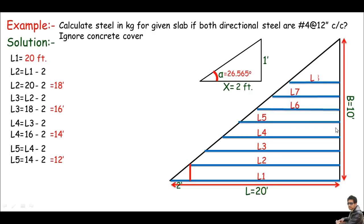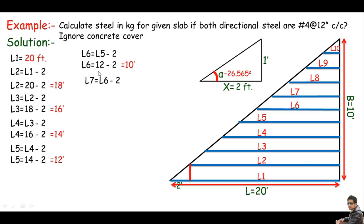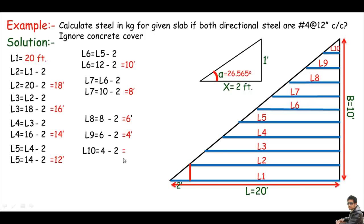Continuing the pattern: L6 = L5 − 2 = 12 − 2 = 10 feet. L7 = L6 − 2 = 8 feet. L8 = L7 − 2 = 6 feet. L9 = 6 − 2 = 4 feet. L10 = 4 − 2 = 2 feet. For L11: L10 − 2 = 2 − 2 = 0, which means there is no L11. We stop at L10.